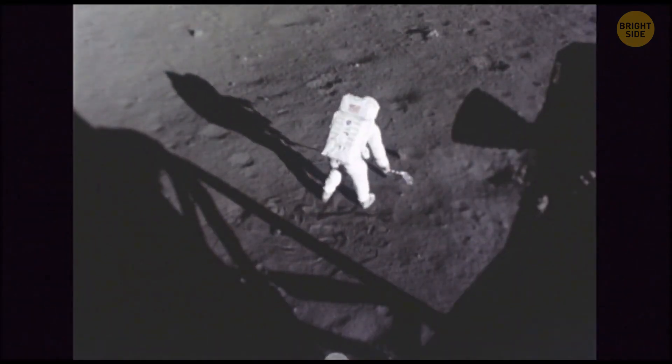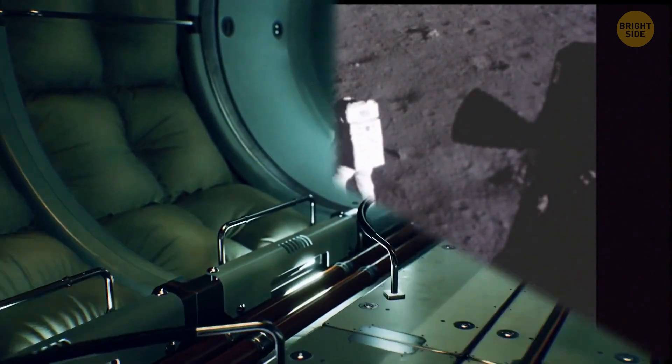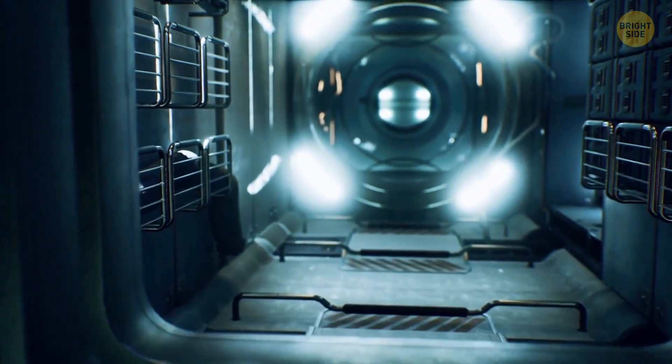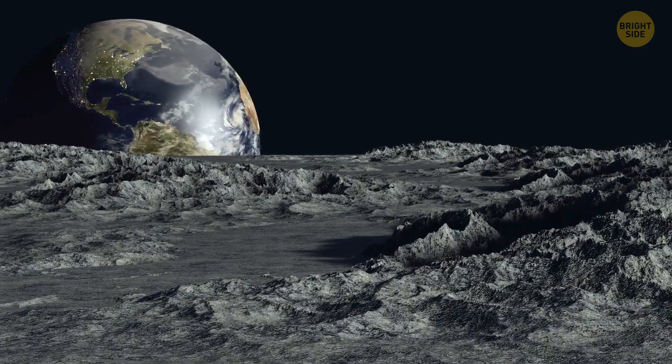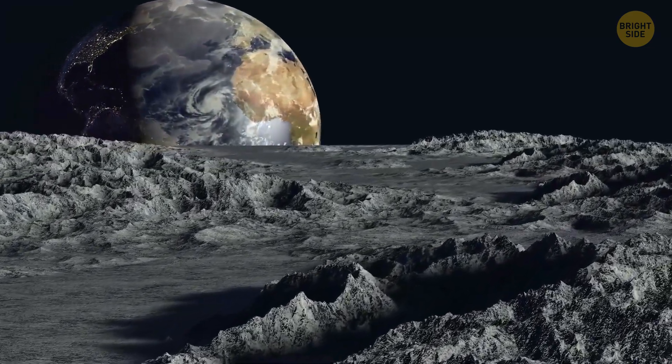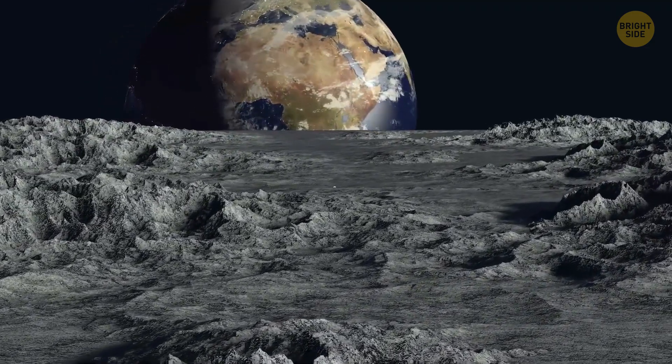The astronauts didn't spend more than 21 hours, 36 minutes on the moon, but they were quite productive, spending most of their time setting up various devices. One of them was supposed to precisely measure the exact distance from there to Earth by timing how long it took a laser beam to travel from Earth to the lunar surface and back.